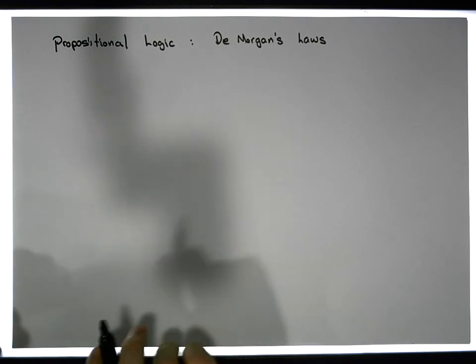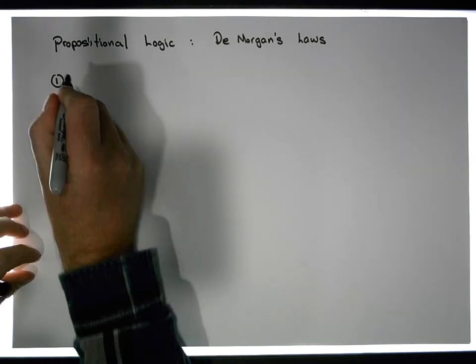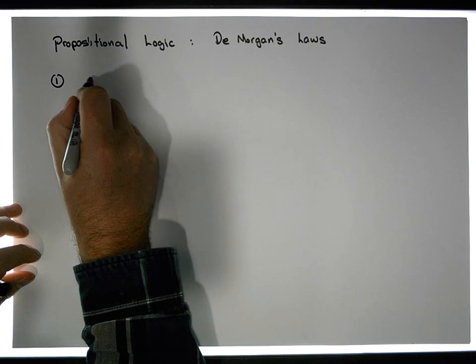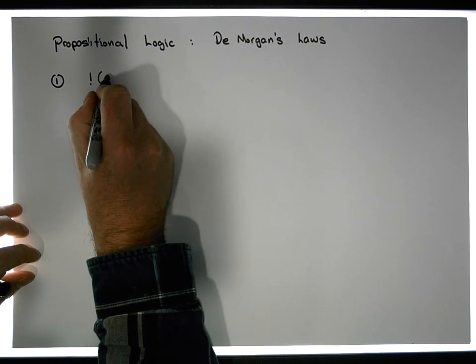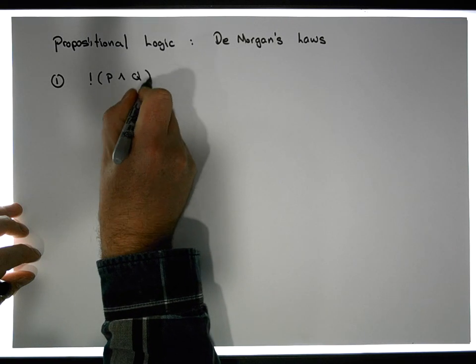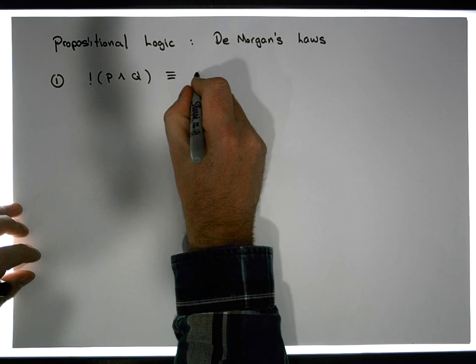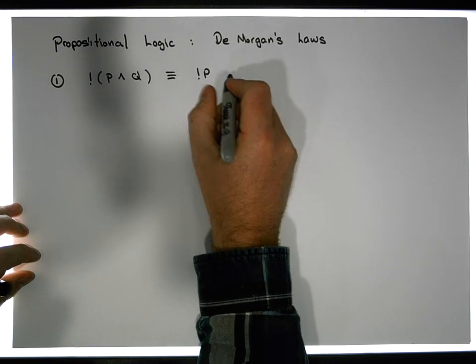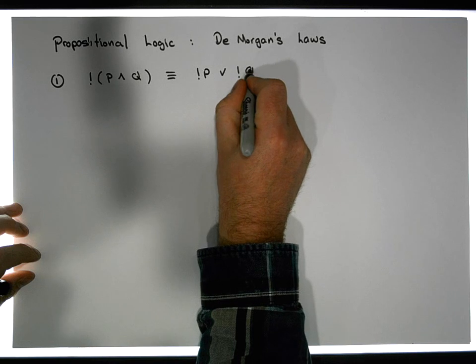So what does De Morgan's Laws tell us from a propositional perspective? Well, Law One says that the negation of a proposition ANDed with another proposition is equivalent to the negation of the individual propositions ORed together. That's one way we could write it.